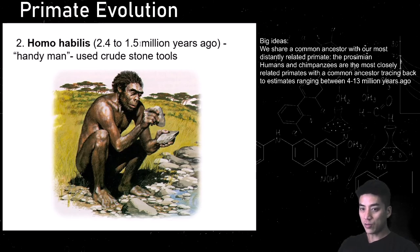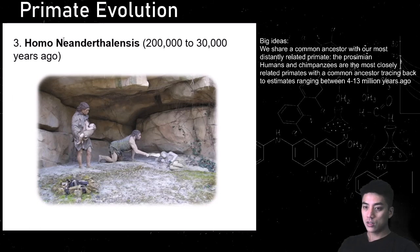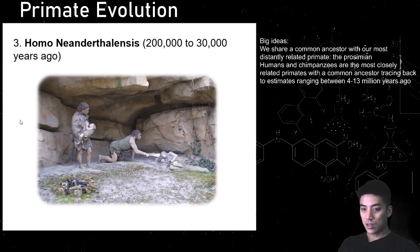Homo habilis, dating from 2.5 to 1.5 million years ago, is a species of hominid known as the 'handyman' because they could start using crude stone tools. From 200,000 to 30,000 years ago, you have Homo neanderthals — your cavemen. Neanderthals had a sense of religion; they would bury their dead. They had social structure, families, could form campfires, and had shelter with family units.